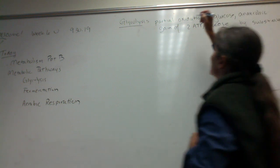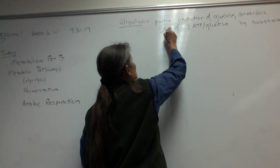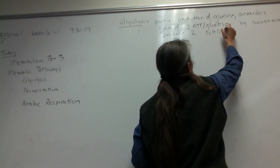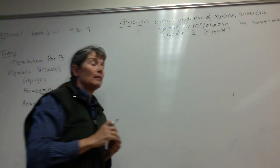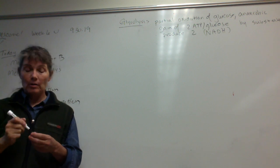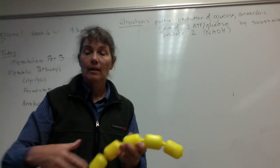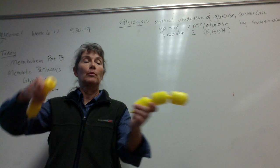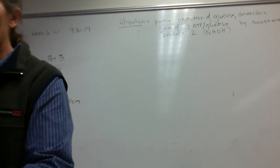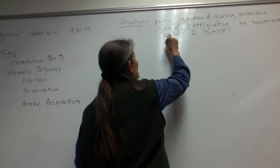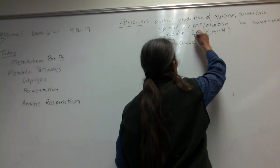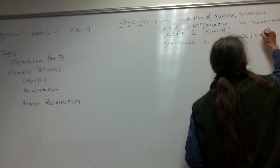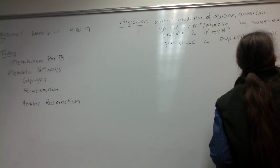Another important product is we're going to produce 2 reduced NADH. And then the final thing to remember is what happens to our carbon skeleton. We start out with a 6-carbon glucose, and during glycolysis — sugar-splitting — we end up with 2 three-carbon products. Those 2 three-carbon products you can call either pyruvate or pyruvic acid. You can use either term.